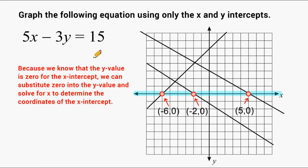Now because we know that the y-value is always going to be zero for the x-intercept, we can always substitute zero in for the y-value and solve for x to find the coordinates of our x-intercept.